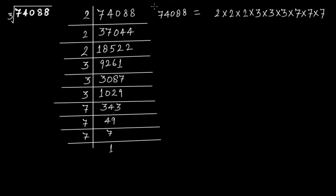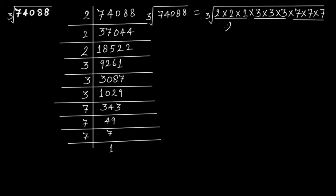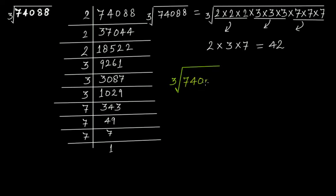So the cube root of 74,088 — take 2 three times, 3 three times, and 7 three times — gives you 2 × 3 × 7, and you get 42. The cube root of 74,088 is equal to 42.